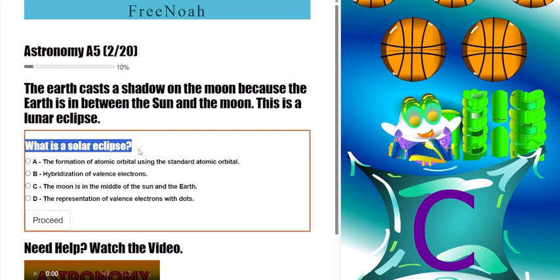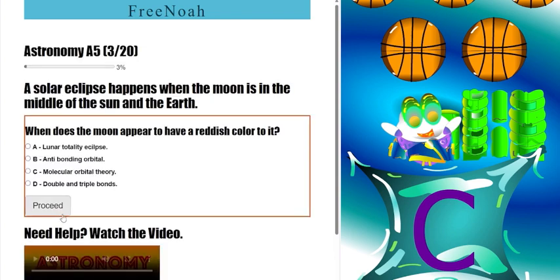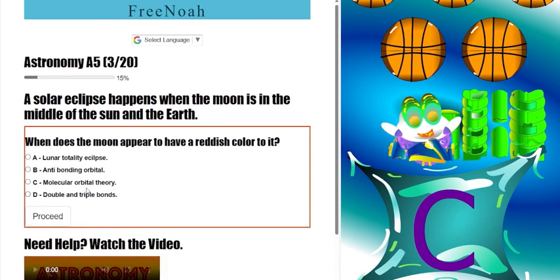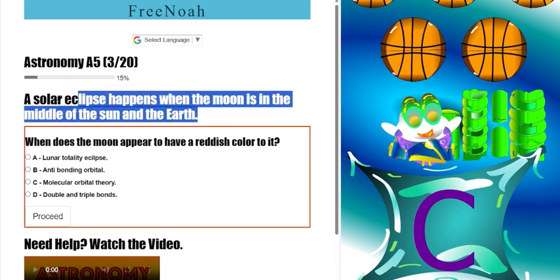What is a solar eclipse? A solar eclipse happens when the moon is in the middle of the sun and earth.